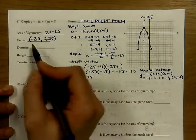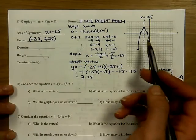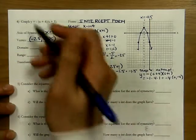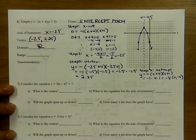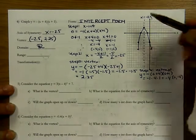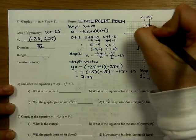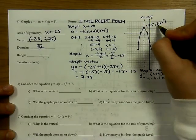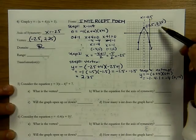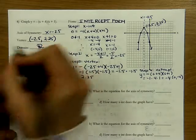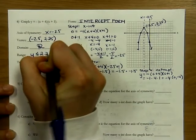Now it's asking for the domain. Because all x-values go from negative infinity to positive infinity, my domain is all real numbers. For the range, the y-values have a maximum since the graph opens down. That highest y-value is at the vertex, which is negative 2.5 comma 2.25. So the range is y less than or equal to 2.25.